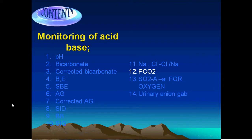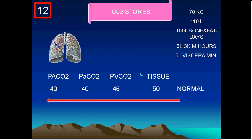The topic today is about the partial pressure of carbon dioxide, which is a very important monitor in ABG interpretation. When you read it, you have to interpret the value. Carbon dioxide is a product of the metabolism of all substrates: lipids, carbohydrates, and proteins.